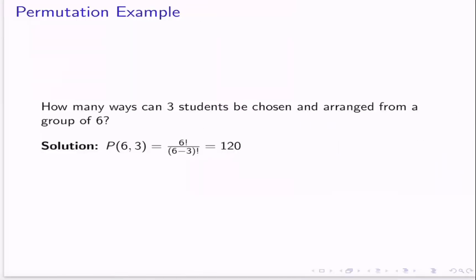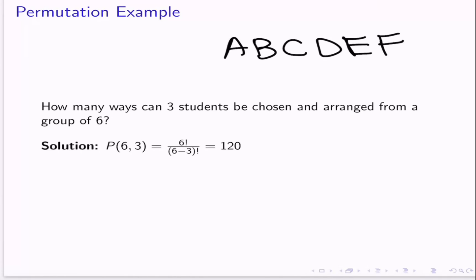Let's do another example about permutations: how many ways can three students be chosen and arranged from a group of six? Originally we have a group of six students — let's call them A, B, C, D, E, and F. We want to choose three of them and then arrange them in a certain order, and the goal is to know how many ways we can possibly do that.